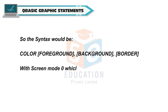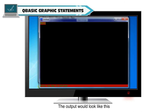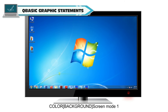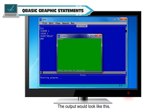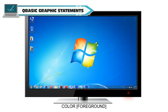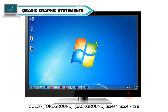The syntax would be: COLOR foreground, background, border — with screen mode 0 (text only). Example: CLS, SCREEN 0, COLOR 2,12,14, PRINT "hello", END. For screen mode 1, syntax is: COLOR background. Example: CLS, SCREEN 1, COLOR 2, PRINT "hello", END. Color foreground and background is used for screen modes 7 to 9.